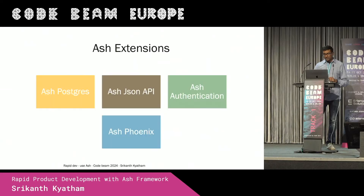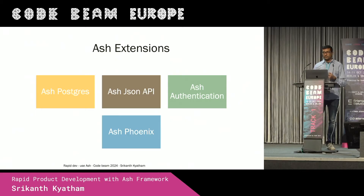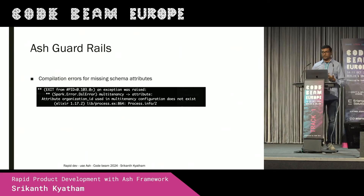Coming to the extensions: if you want to persist your resource, there is AshPostgres, which is an extension for your resource. For a REST API, there is another extension. There is also AshAuthentication and AshPhoenix — I especially like AshPhoenix, which gives you nice APIs for dealing with nested forms, compared to vanilla Phoenix. On top of that, Ash gives you guardrails: if you make mistakes in relationships or are missing attributes, it tells you right at that point, so I can focus on what I'm writing rather than on my mistakes.